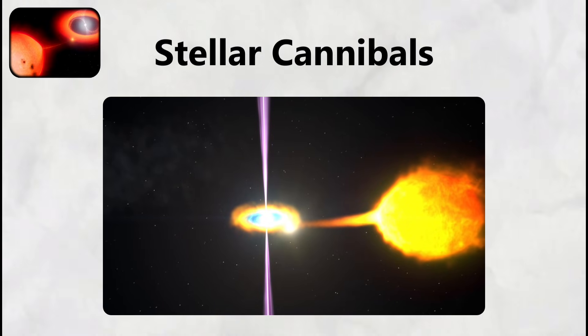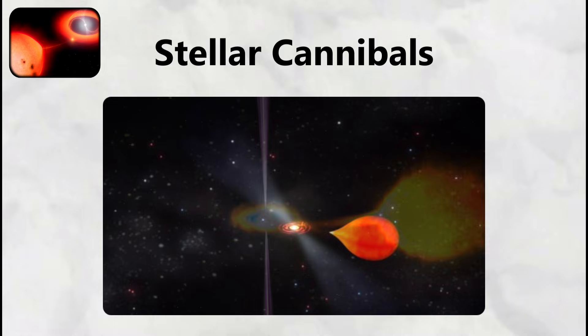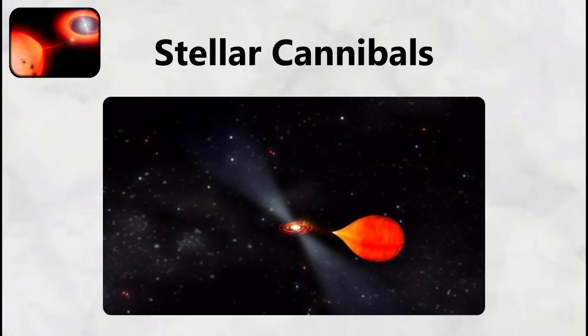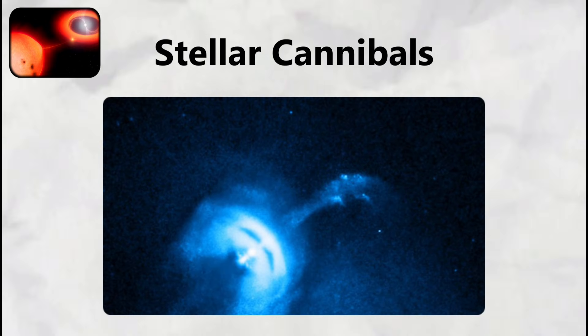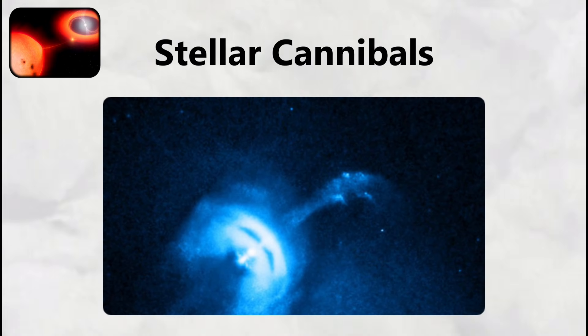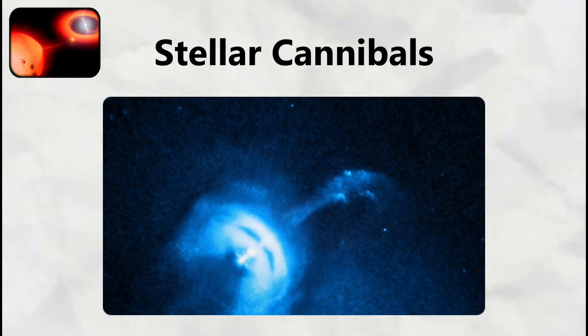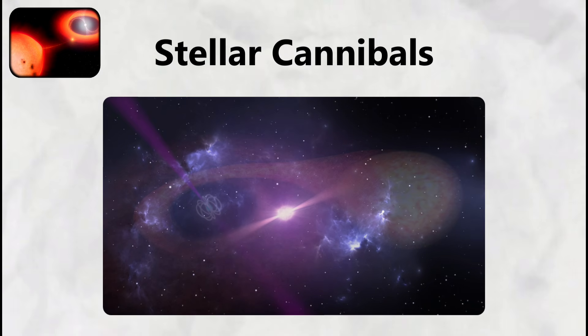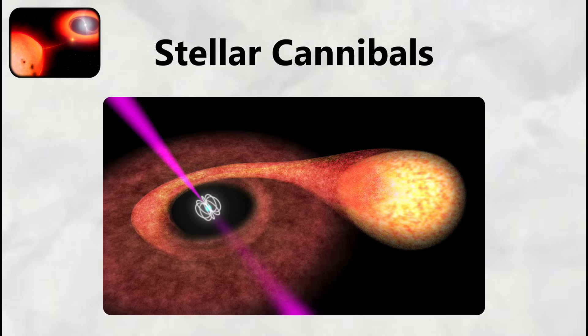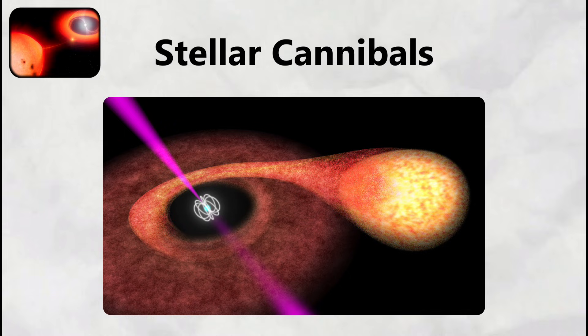The pulsar's companion star, originally similar in mass to our Sun, has been stripped down to just 2% of the Sun's mass through a process called ablation, where the pulsar's intense radiation heats the companion surface to temperatures exceeding 8,000 degrees Celsius. This heating causes the companion star's outer layers to evaporate into space, creating a stream of ionized gas that the pulsar gradually consumes.